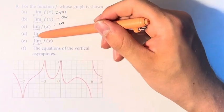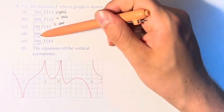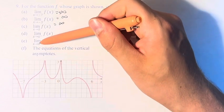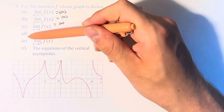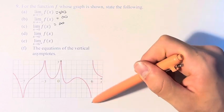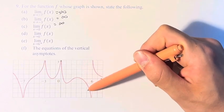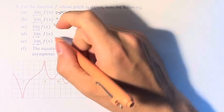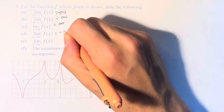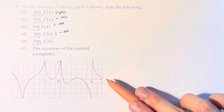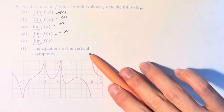As x approaches 6 from the left, which is what this minus sign denotes, versus plus means from the right. As x approaches 6 from the left, again, this is x equals 6. From the left, we're going here, here, here, and the function is going off to negative infinity. Versus from the right, from values greater than 6, it's going off to positive infinity.